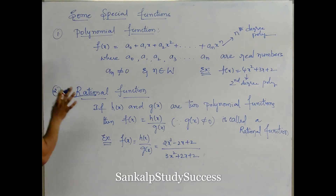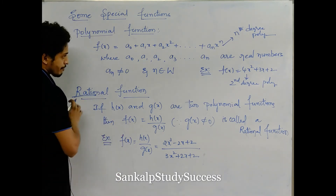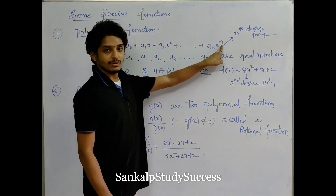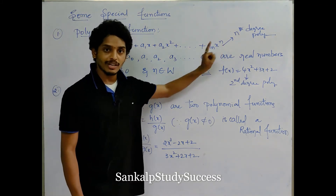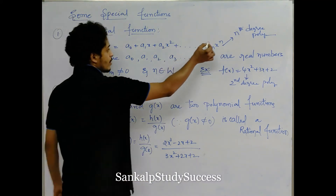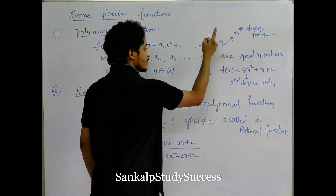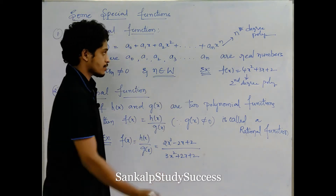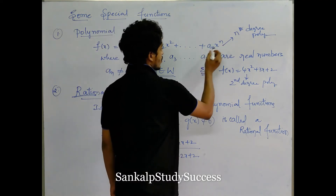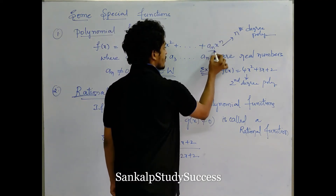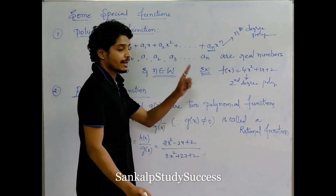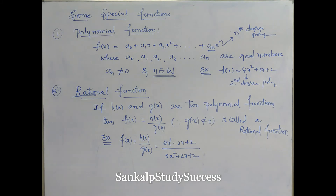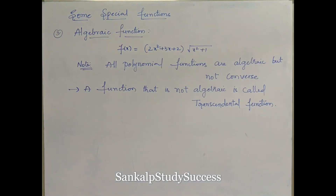If the highest power is n equals 0, that is x power 0, you get a constant polynomial. Since n belongs to whole numbers and we can substitute 0, x power 0 is possible — that means a real number constant. So it is possible to have a constant function as a special case of polynomial function.